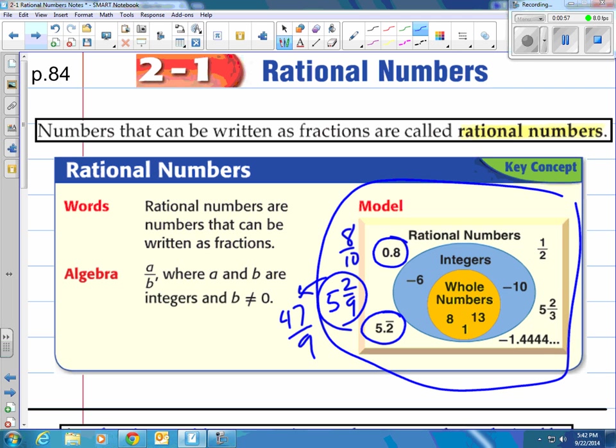Integers are like negative 2, negative 10. Any negative or positive whole number is what we call integer. Whole numbers are just the positives, and all of these can be written as fractions. Like negative 6 can be written as negative 6 over 1. These are all rational numbers because they can be written as fractions.